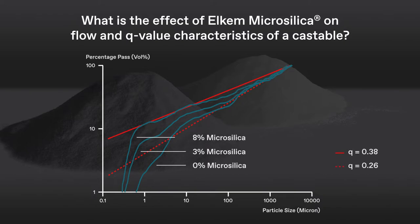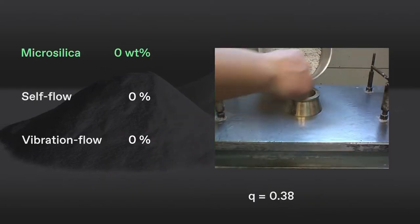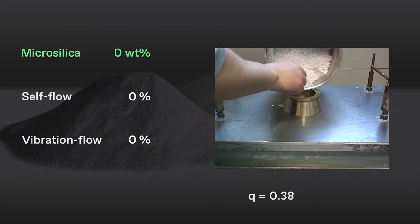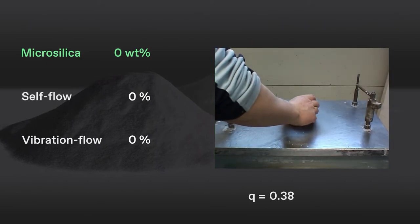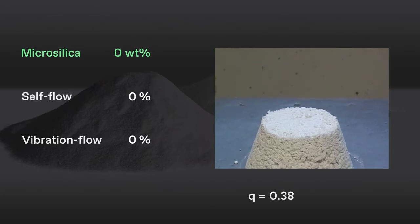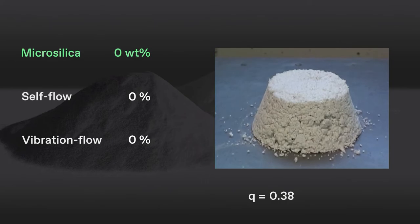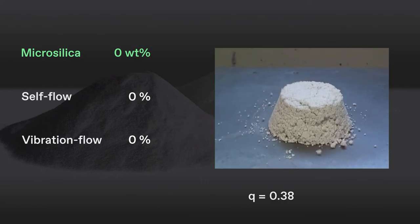What is the effect of Elkem microsilica on flow and Q value characteristics of a castable? We start with a castable based on five different sizes of white fused alumina and 4.15% of water. In this case, the dosage of Elkem microsilica is zero. After casting, we then measure the self-flow and vibra-flow values.